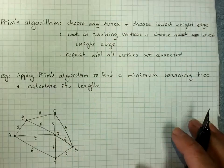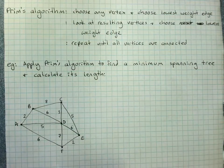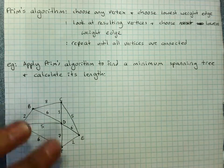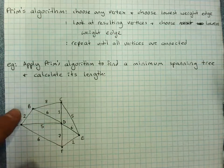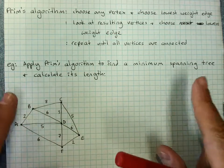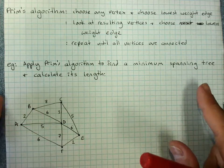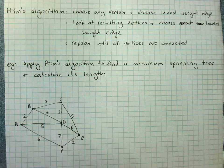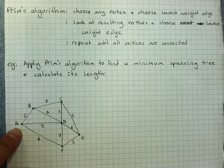This is going to be much easier to see with an example. You'll usually end up redrawing your tree rather than just circling things, but we'll see how we go. So apply Prim's algorithm to find a minimum spanning tree and calculate its length. Choose any vertex. Let's choose A.